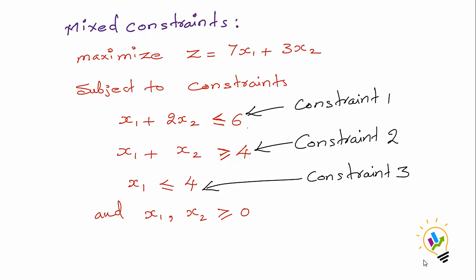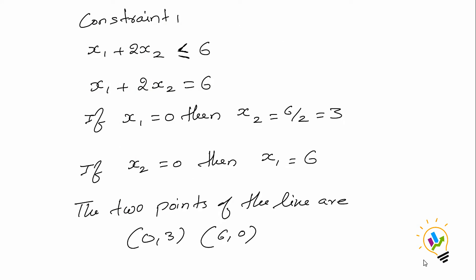First, we discuss constraint 1: x1 + 2x2 ≤ 6. In the graphical method, we remove the inequality to get the equation x1 + 2x2 = 6. If x1 = 0, then x2 = 3; if x2 = 0, then x1 = 6. So the two points of this line are (0, 3) and (6, 0).